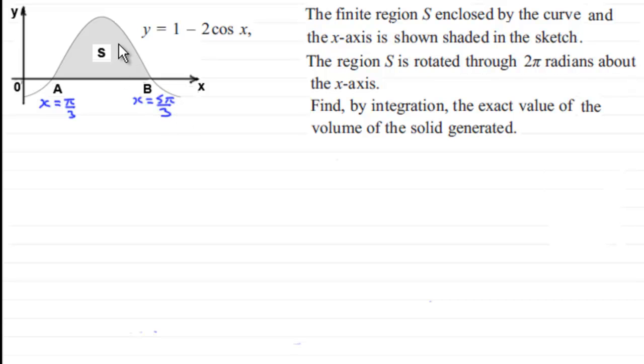This region S is rotated through 2 pi radians about the x-axis. What we've got to do is find by integration the exact value of the volume of the solid generated. If this is a question you would like to have a go at and haven't done so already, just give you a moment to pause the video and come back to check your solution with mine.